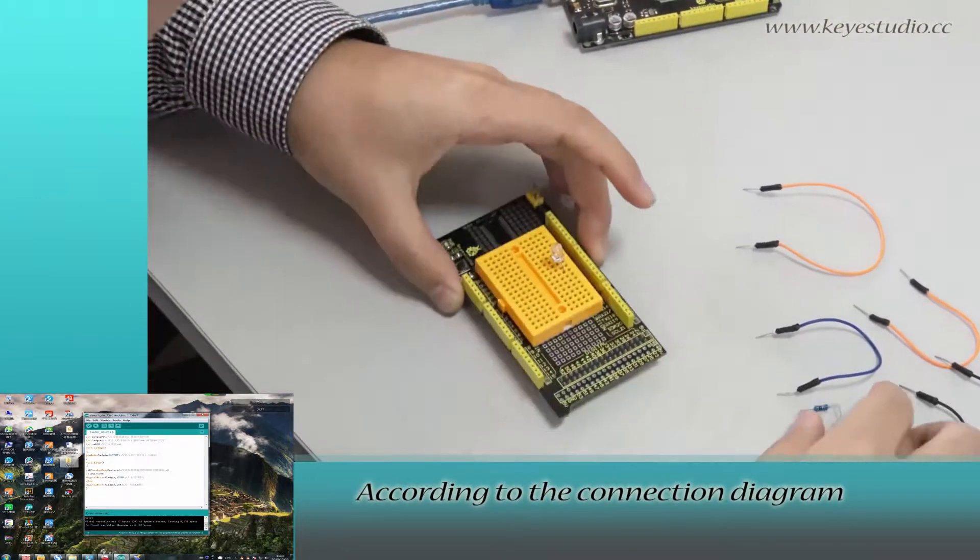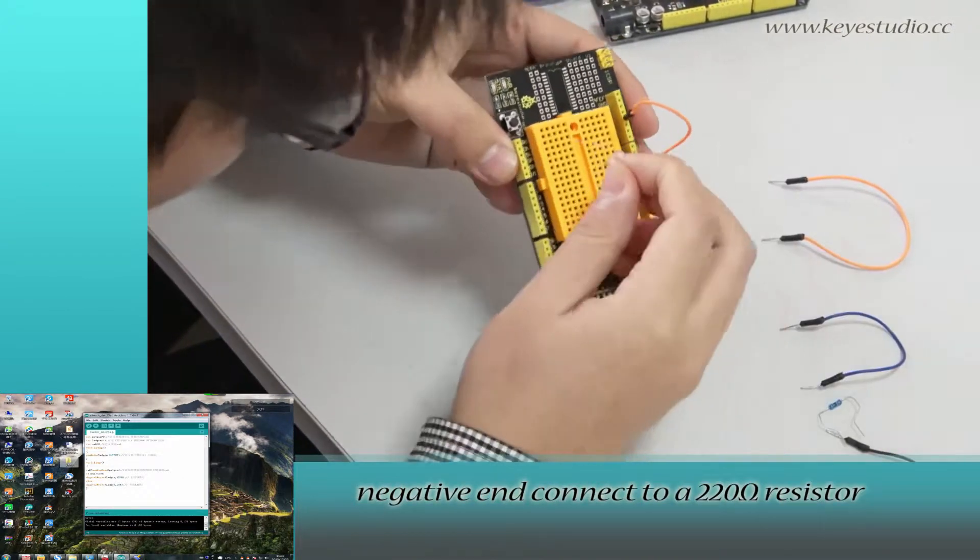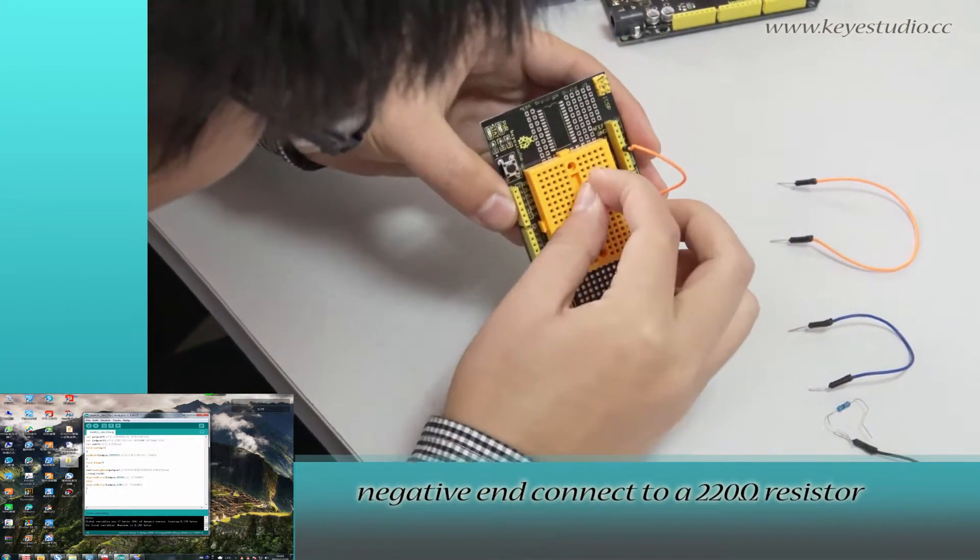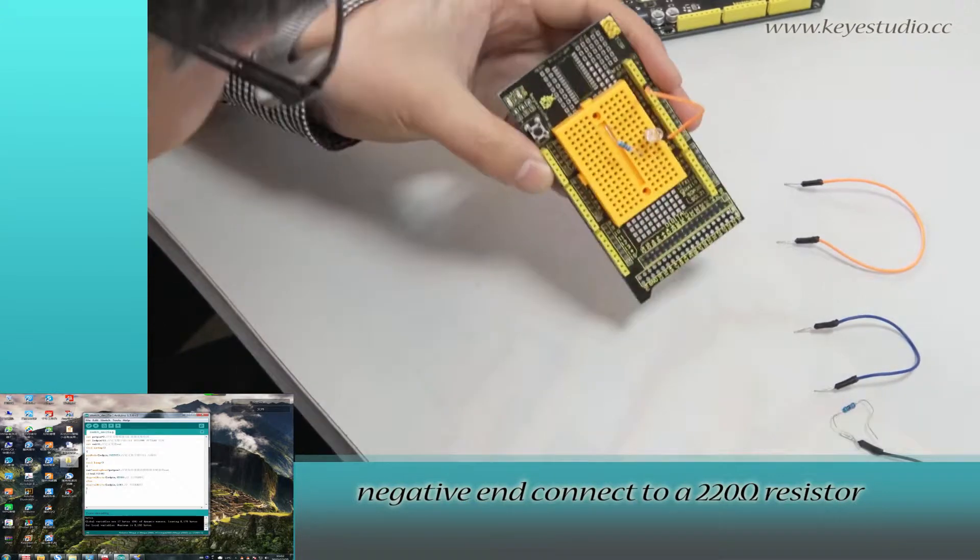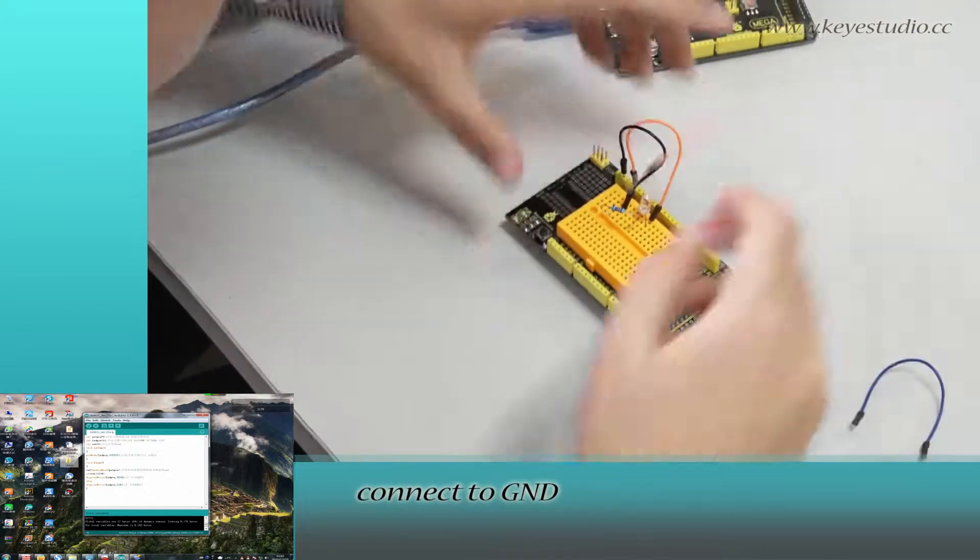According to the connection diagram, connect the LED to D11. The negative end connects to a 220 ohm resistor, and the other end of the resistor connects to ground.